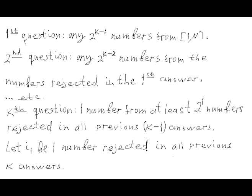In the second question, B will specify half of these rejected numbers, so that after any answer to the second question, there will be at least 2^(K−2) numbers rejected in both the first and second answers. B continues this process until question number K, in which B specifies one number from at least 2^1 numbers rejected in all the previous K−1 answers. That leaves at least one number after K consecutive questions that was rejected in all K answers.